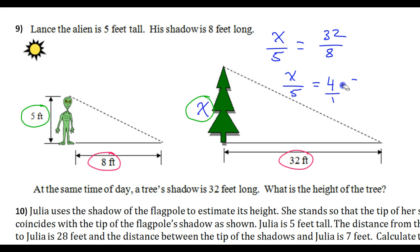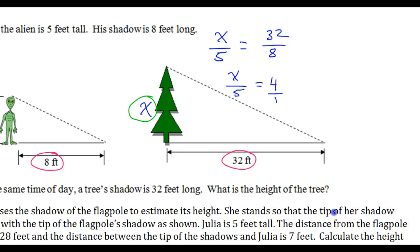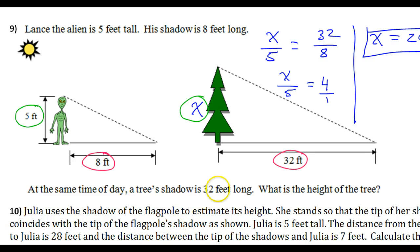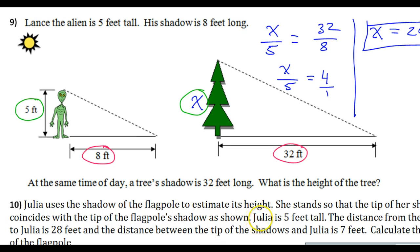Whatever you're comfortable with. But since usually we do cross multiplication on these problems, I'll stick with that. So X times 1 would be X and 4 times 5 would be 20. So the height of the tree is 20. That's it for number 9.